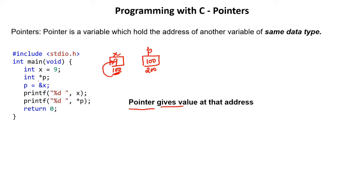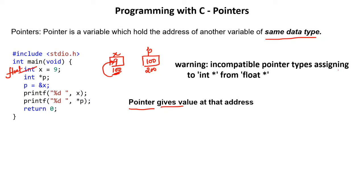Now let's discuss what happens when data types don't match. Suppose I have a pointer p of integer type, but variable X is of float type with some value like 9.0. When I assign the address of X, a float variable, to a pointer of integer type, this is incorrect. The moment you do this, you will get a warning — not an error — and the warning will say 'incompatible pointer type: assigning to integer pointer from float pointer.'